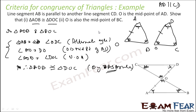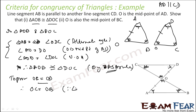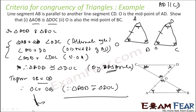Next, prove that O is the midpoint of BC. To prove O is the midpoint of BC, we have to prove that OC is equal to OB. Since OC and OB are corresponding sides of these two congruent triangles, we can say OC is equal to OB. Therefore O is the midpoint of BC.